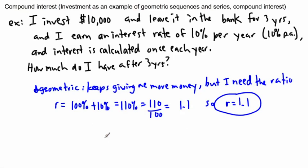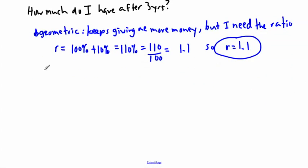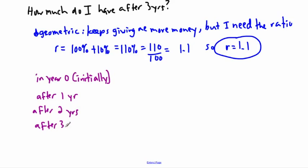Now I think it's nice to sort of do this by hand here. So let's maybe calculate this. I'll say in year zero, in other words initially. And after that I'm going to say after one year, after two years, and finally after three years. So in year zero, initially, how much money do I have? Well, all I have is just $10,000. That's it.